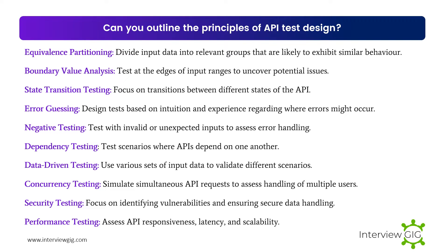Error guessing — design tests based on intuition and experience regarding where errors might occur. Negative testing — test with invalid or unexpected inputs to assess error handling. Dependency testing — test scenarios where APIs depend on one another. Data-driven testing — use various sets of input data to validate different scenarios. Concurrency testing — simulate simultaneous API requests to assess handling of multiple users. Security testing — focus on identifying vulnerabilities and ensuring secure data handling. Performance testing — assess API responsiveness, latency, and scalability.